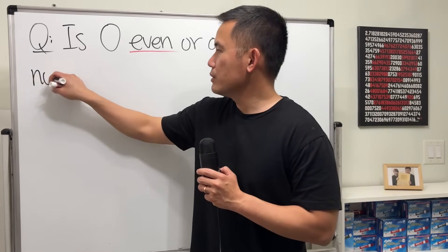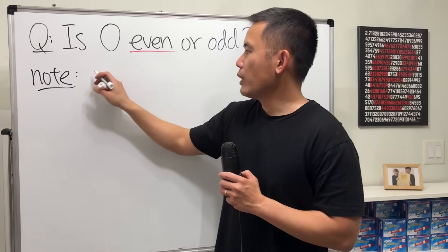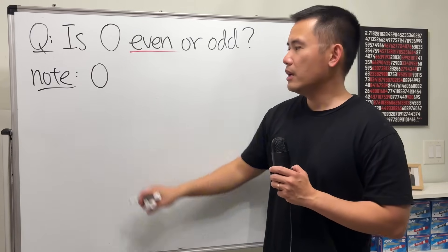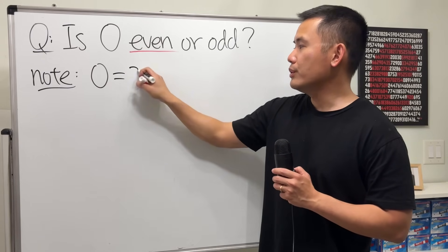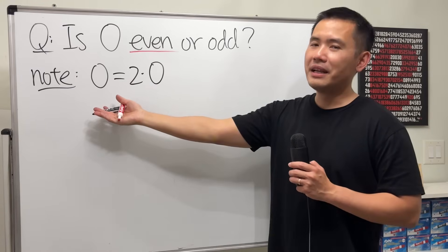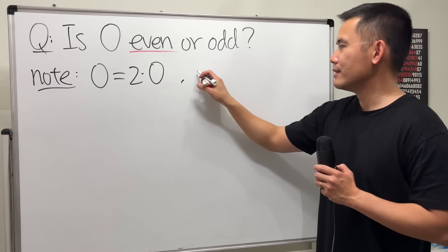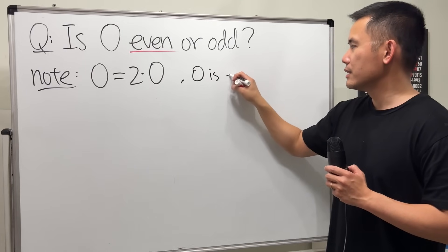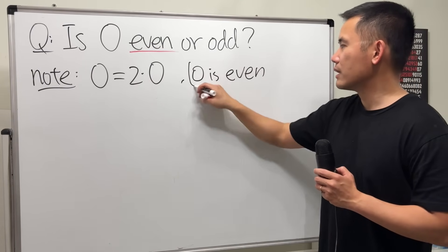So all I'm going to do is write 0 as a multiple of 2. And all we have to do is just say 2 times 0. Hey, that is a multiple of 2. So 0 is even. So 0 is even and then we are done.